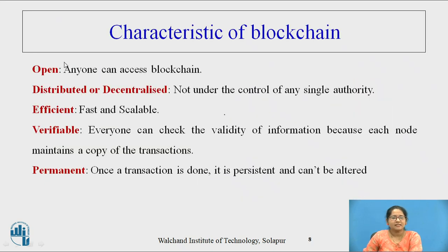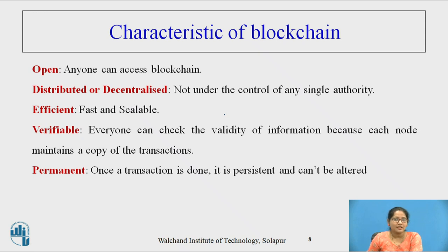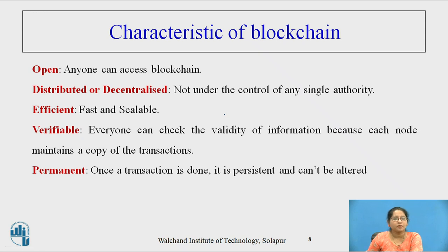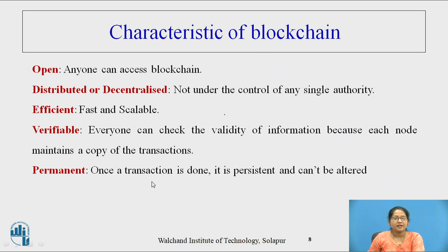Some characteristics of blockchain: Open — anyone can access the blockchain. Distributed or decentralized — not under the control of a single authority; decisions depend on the aggregate decision of nodes. Efficient — fast and scalable; new blocks can be added or removed. Verifiable — everyone can check the validity of information because each node maintains a copy of the transaction. Permanent — once a transaction is done, it is persistent and cannot be altered.